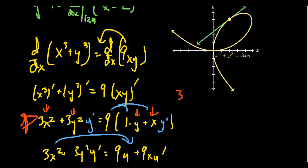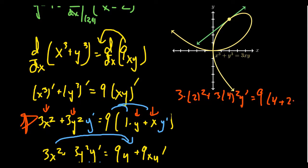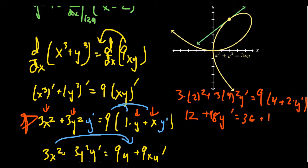If we plug in x equals 2 and y equals 4 immediately after differentiating, we get: 3 times 2 squared plus 3 times 4 squared times y′ equals 9 times 4 plus 9 times 2 times y′. That works out to: 3 times 4 is 12, plus 3 times 16 is 48·y′, equals 9 times 4 which is 36, plus 9 times 2 which is 18·y′. We now have a simple linear equation with only y prime as the unknown.